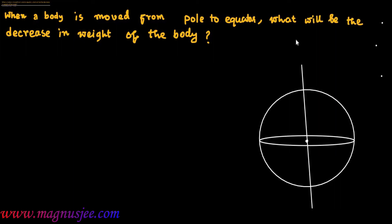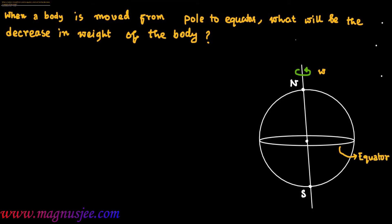You can draw the equator — this circular outline is the equator. North pole and south pole of earth. Earth rotates about its own axis from east to east with an angular velocity omega, and this circular plane is the equator of earth.